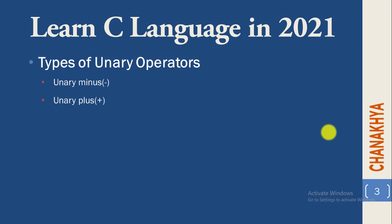Unary plus operator is used to change a negative value to positive. Then there is the increment unary operator, which is used to increment the value of a variable by one.